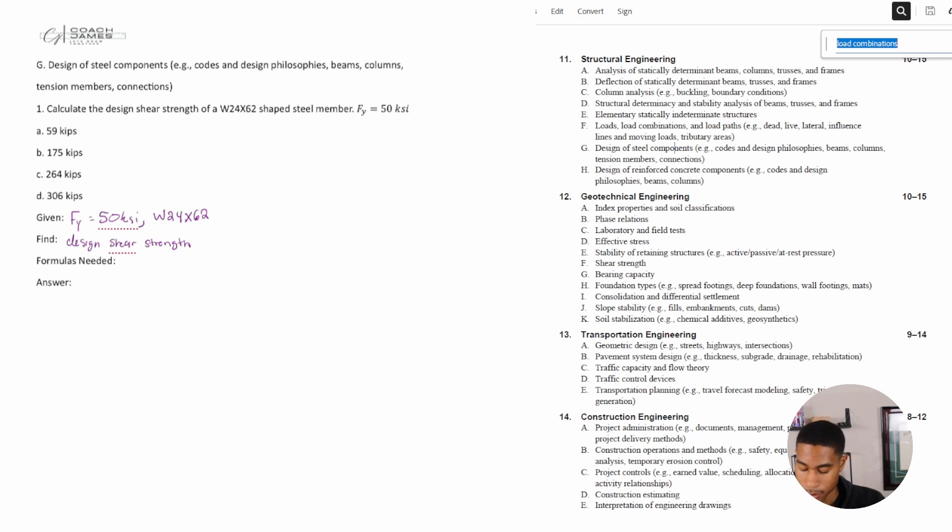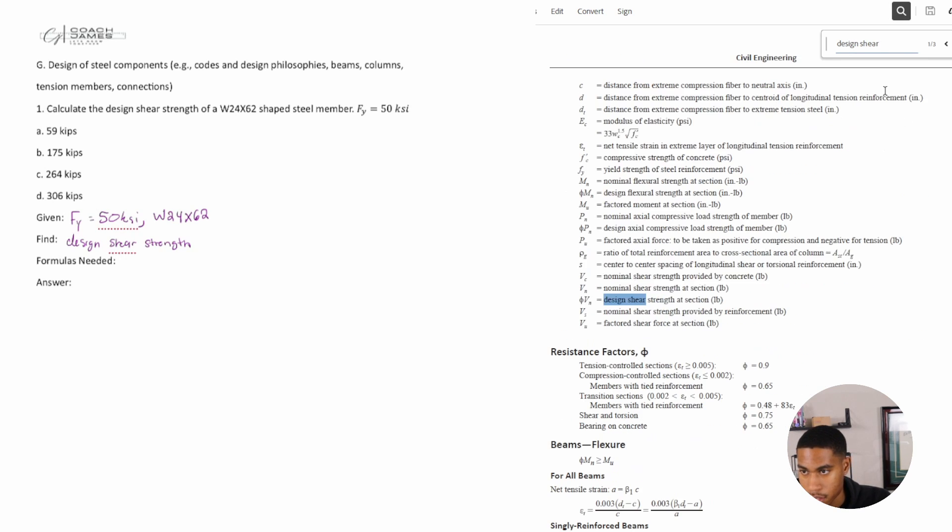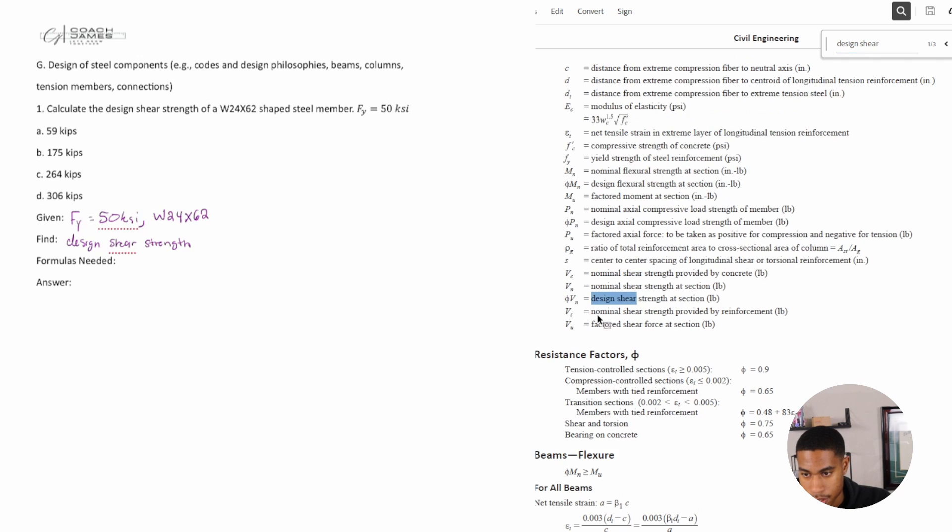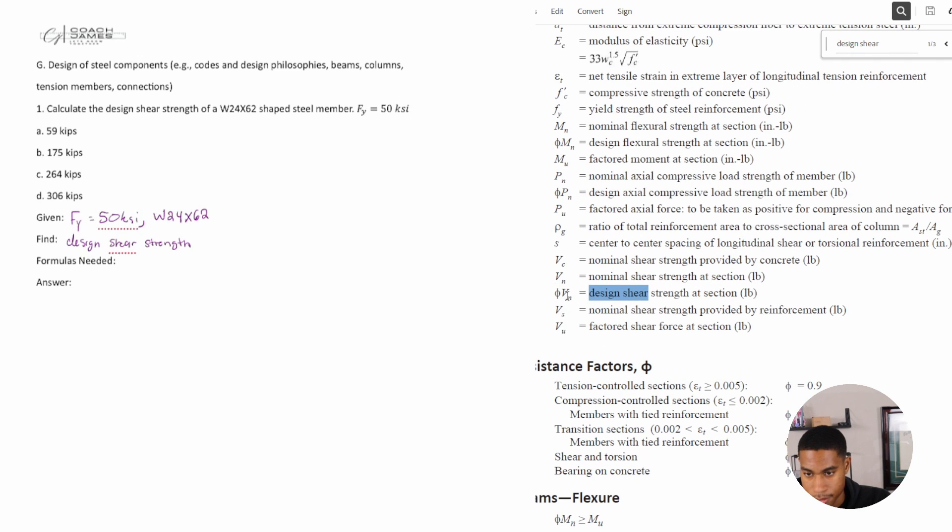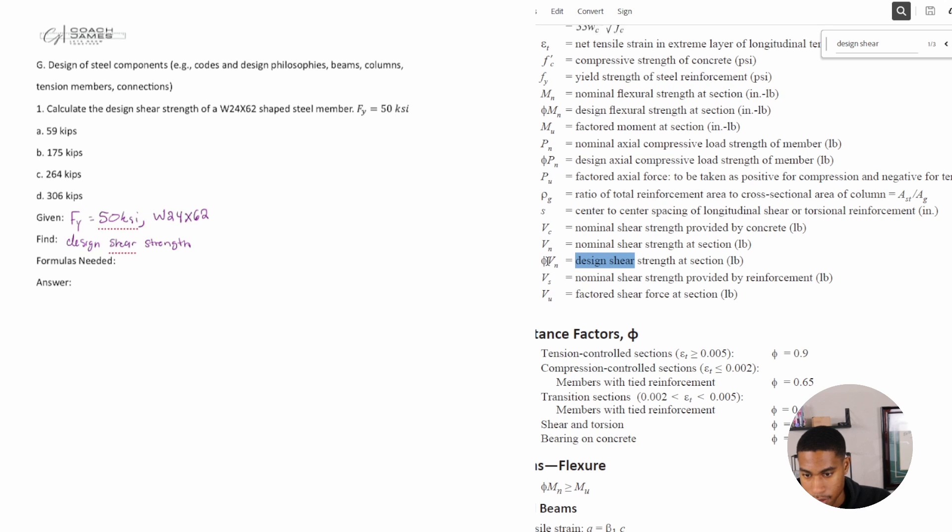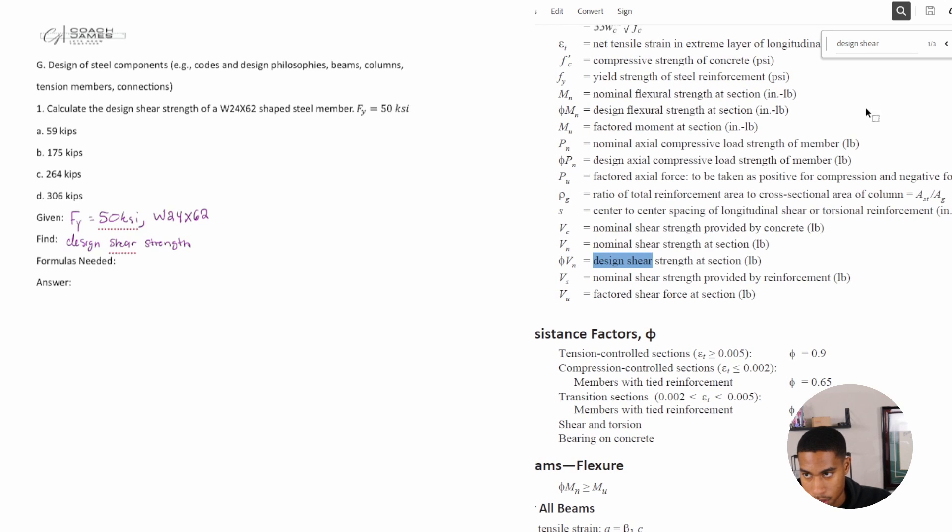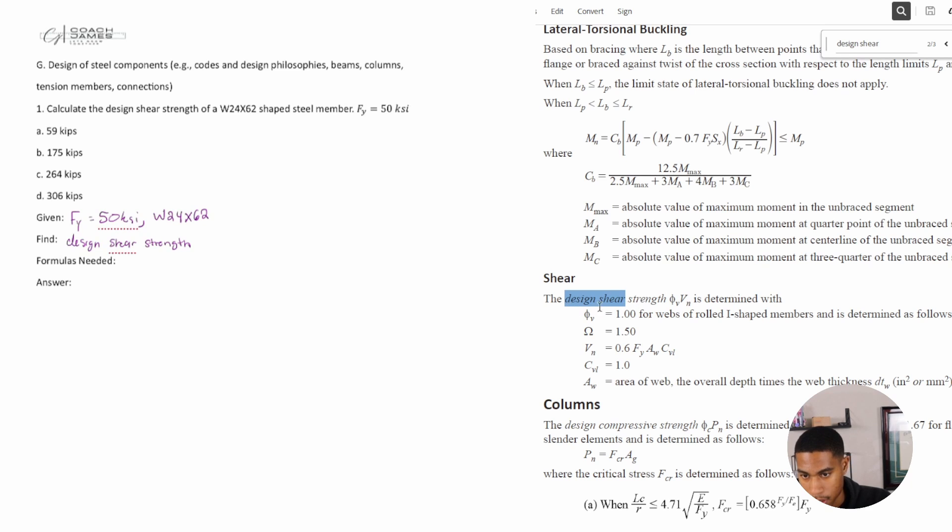I think the best thing to do is always to search what you're trying to find, so design shear strength. The design shear strength of a section is the symbol phi sub vn, φVn. The design shear strength φVn is determined with φV equal to 1, so that's φV and then Vn.